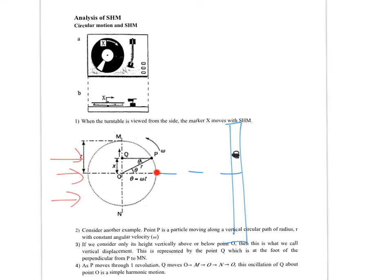Starting from the middle, the shadow goes up to the highest point, then back to the middle, then down to the lowest point, and finally returns to equilibrium — one complete oscillation for one complete revolution. Displacement in SHM is always measured from the equilibrium position.